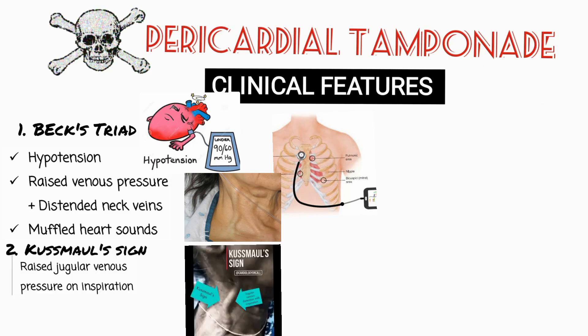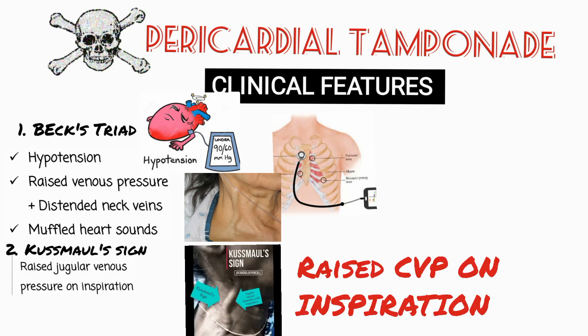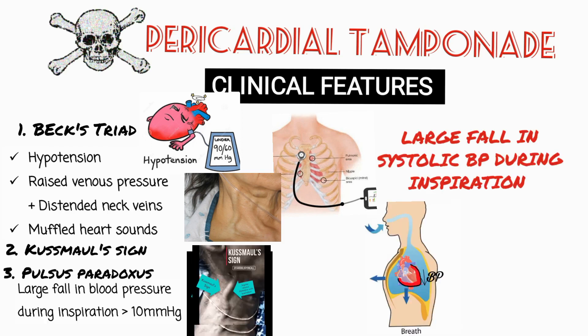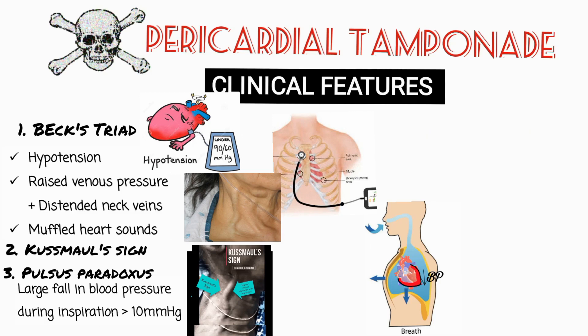Other features include Kussmaul's sign, which is raised central venous pressure on inspiration. Another feature is pulsus paradoxus, which is a large fall in systolic blood pressure during inspiration. In normal conditions the blood pressure does fall during inspiration, but it is less than 10 mmHg. But in pulsus paradoxus the drop is more than 10 mmHg, due to decreased filling and decreased cardiac output.